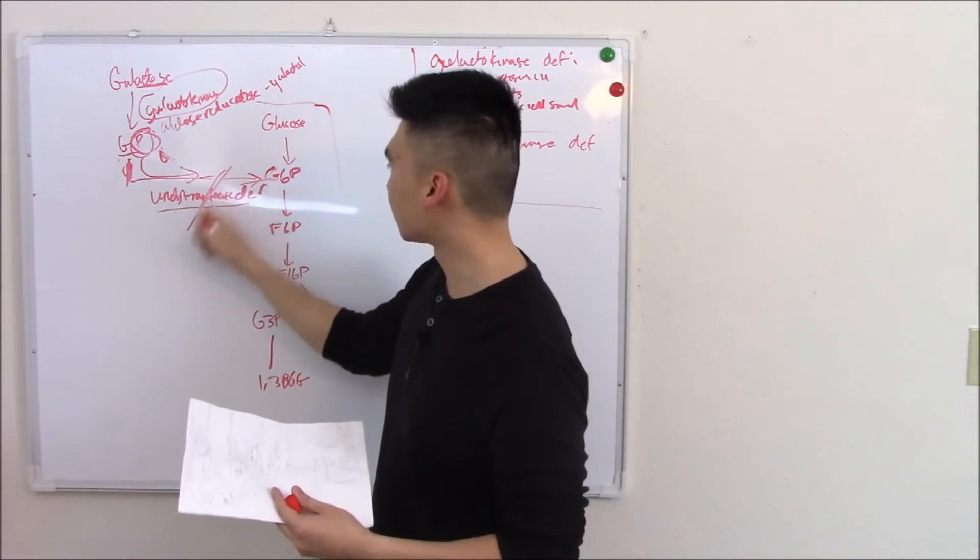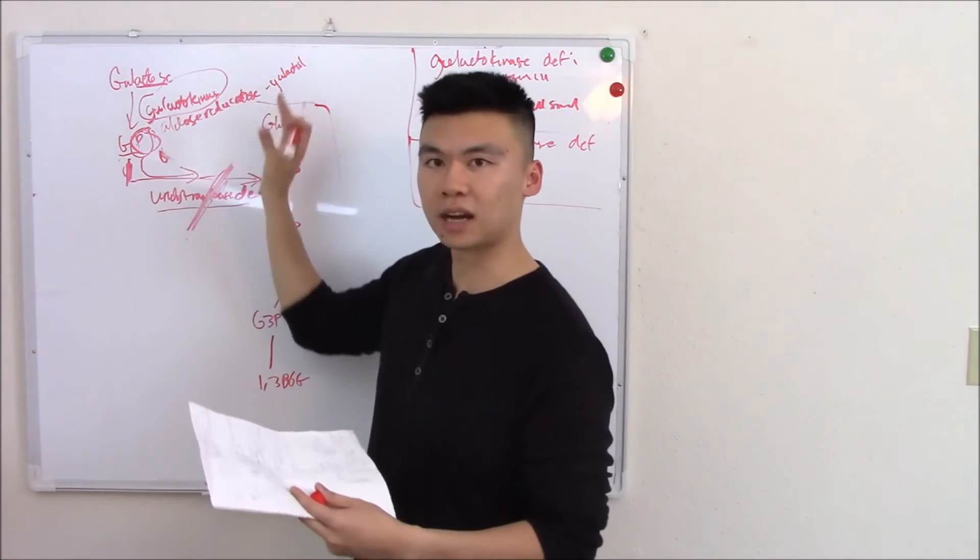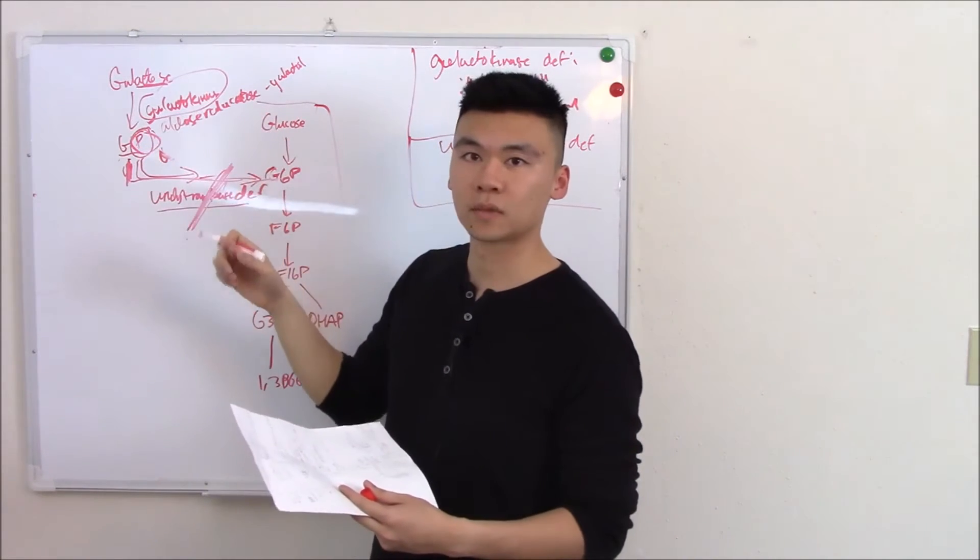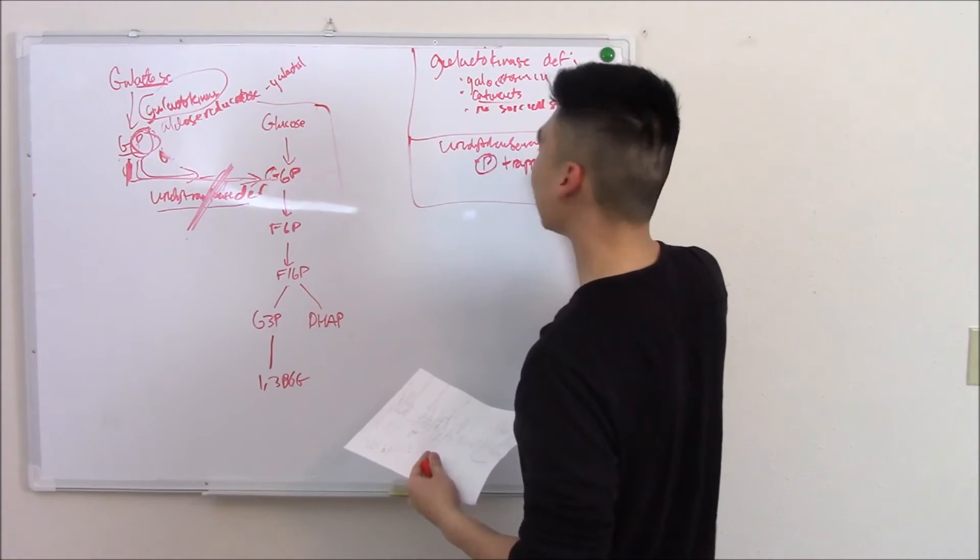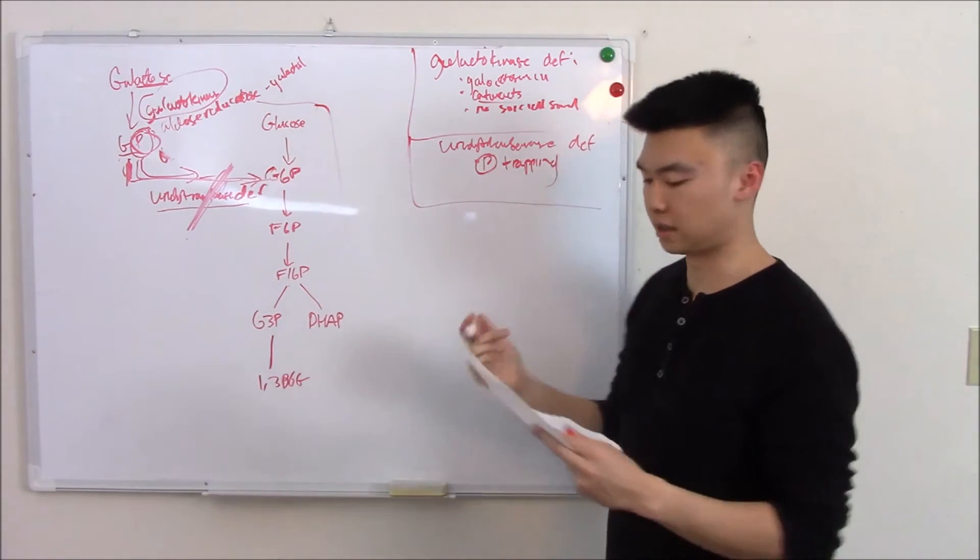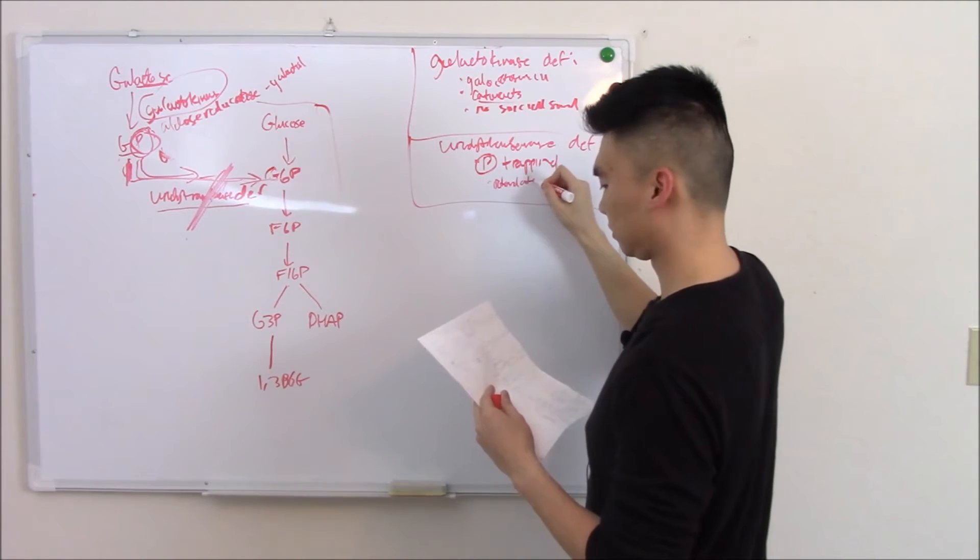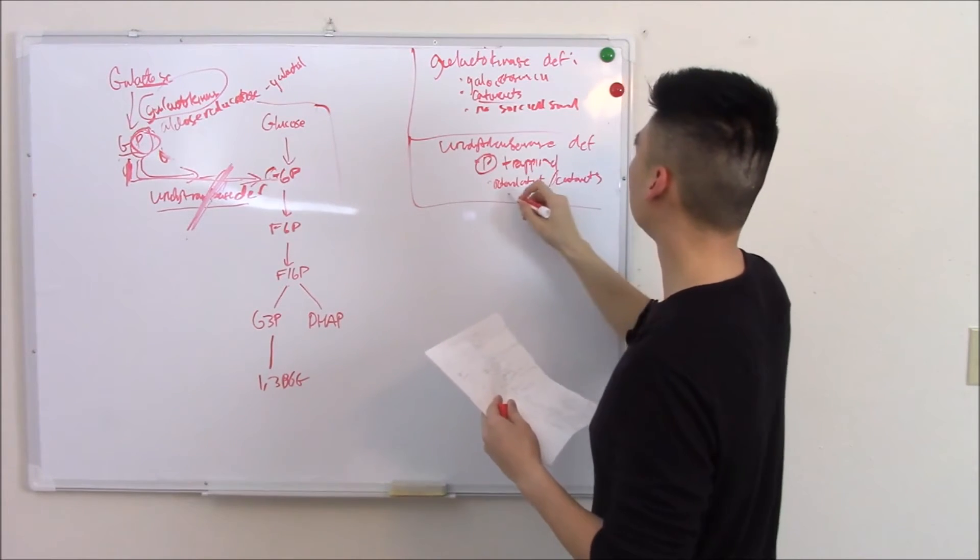Well if you're lacking this, if you're lacking this enzyme then it can't go in that cycle. So we're putting all these valuable phosphates on but it's giving us no reward. That is phosphate trapping and that is why it is more severe. This causes retardation, cataracts, death.